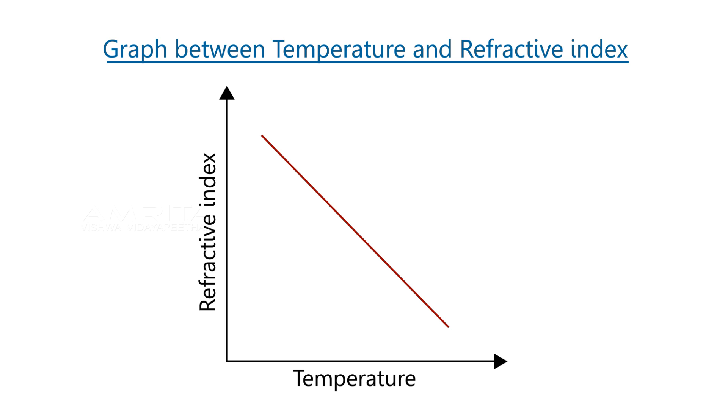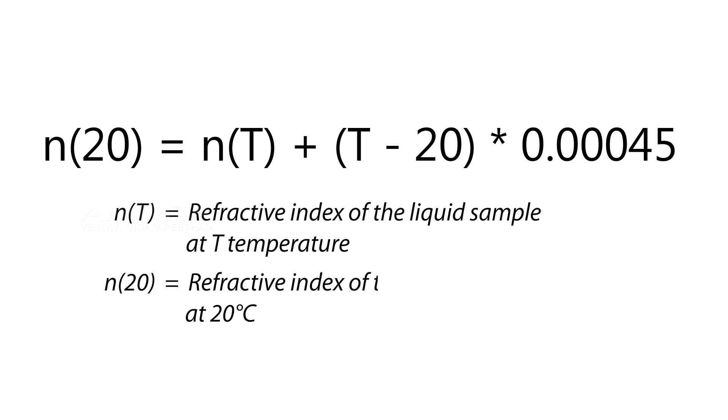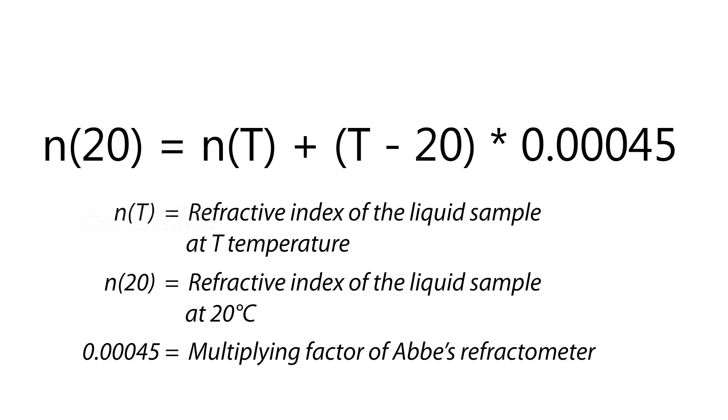The variation can be defined by equation: n₂₀ = nₜ + (t - 20) × 0.00045, where nₜ is the refractive index of the liquid sample at t temperature, n₂₀ is the refractive index of liquid sample at 20°C, and 0.00045 is the multiplying factor of an Abbe refractometer.